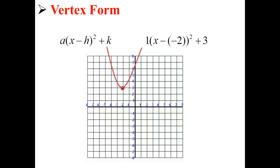Here we've graphed our parabola. Our parabola has its vertex at negative 2, 3. It has its axis of symmetry at x equals negative 2, and it opens upwards.